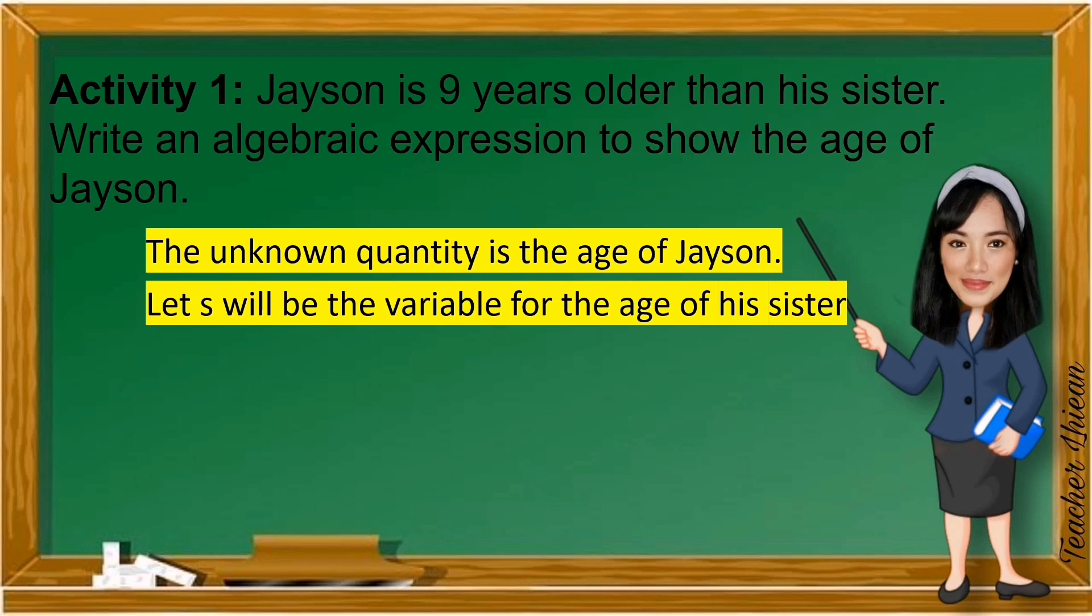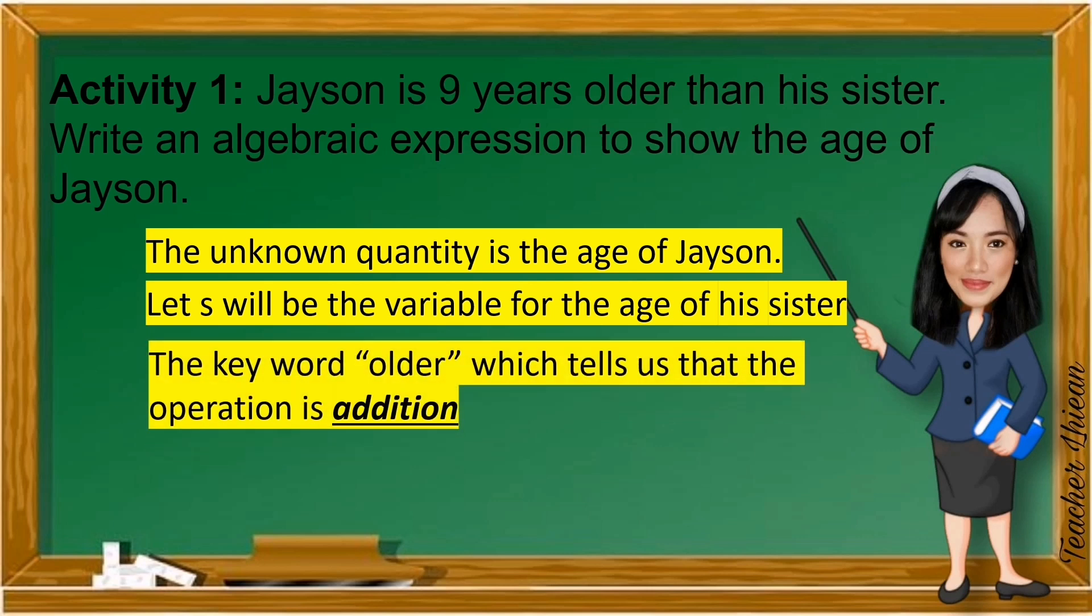Next, we have to look for the keywords in what operation to be used. The keyword here is older, which tells us that the operation is addition. And last, let us arrange the variable, constant, and operation in proper order based on the given problem to form algebraic expression. So, the expression for the age of Jason is S plus 9. That means the age of his sister plus 9 years will be the age of Jason.